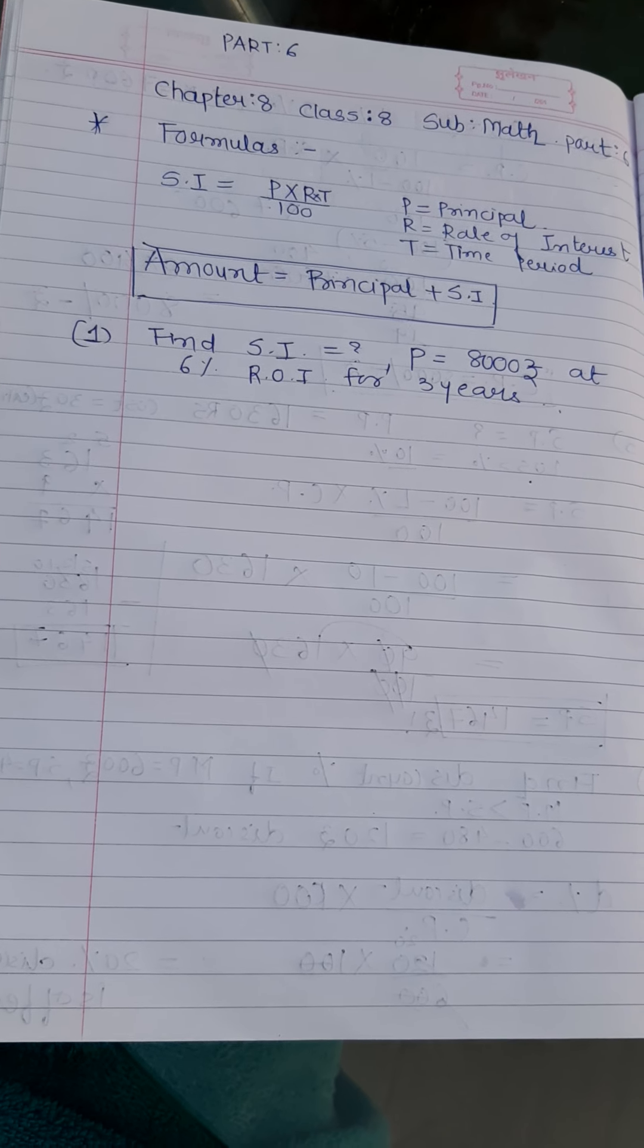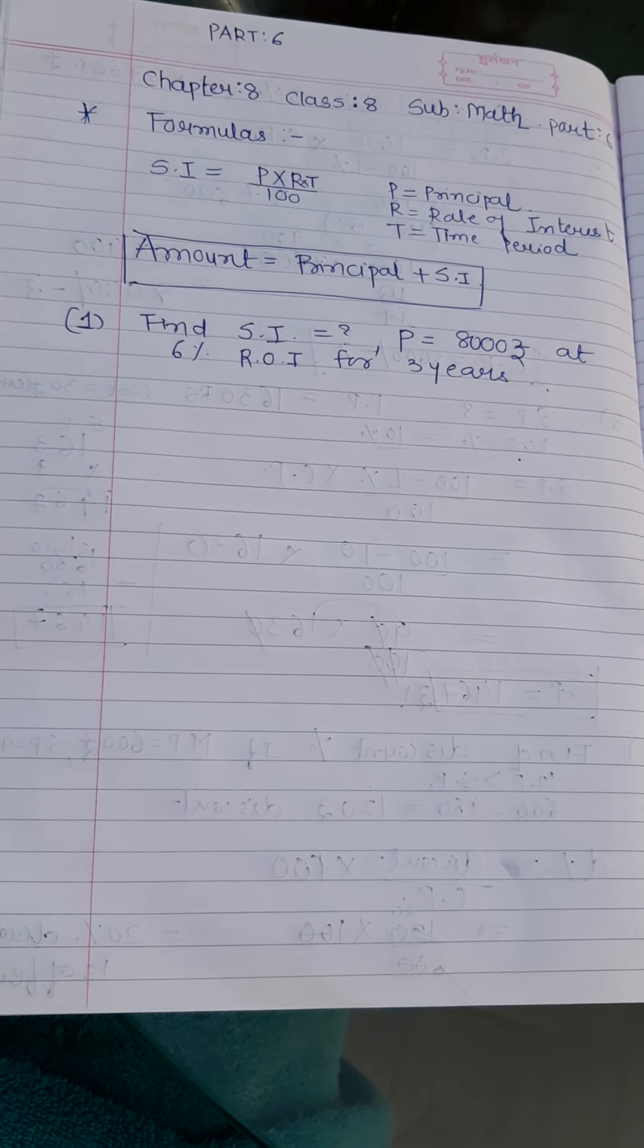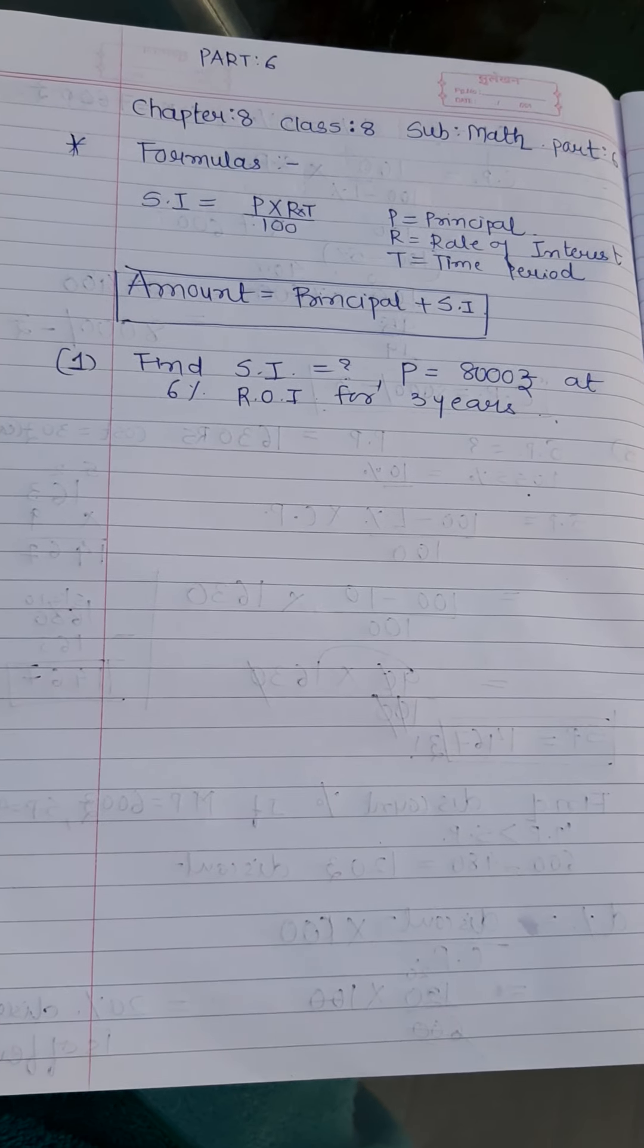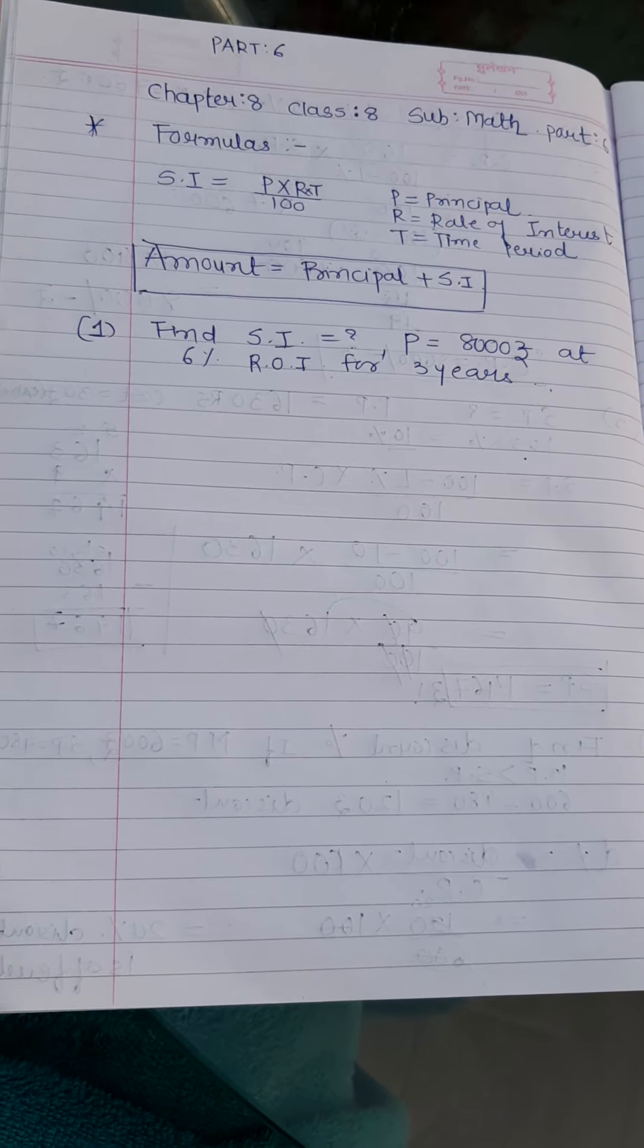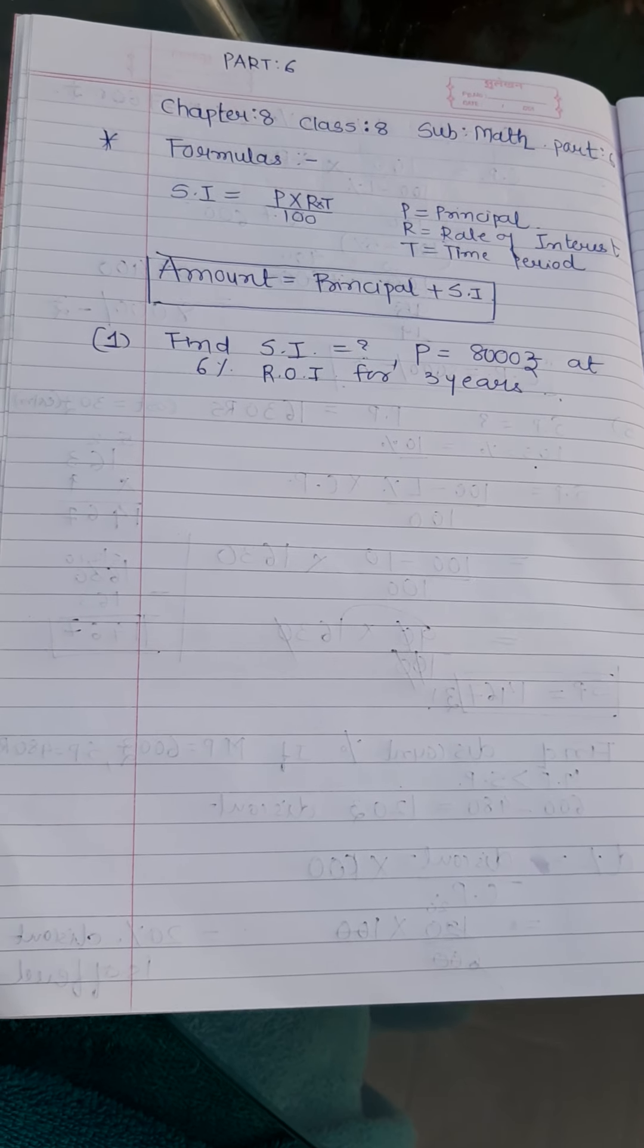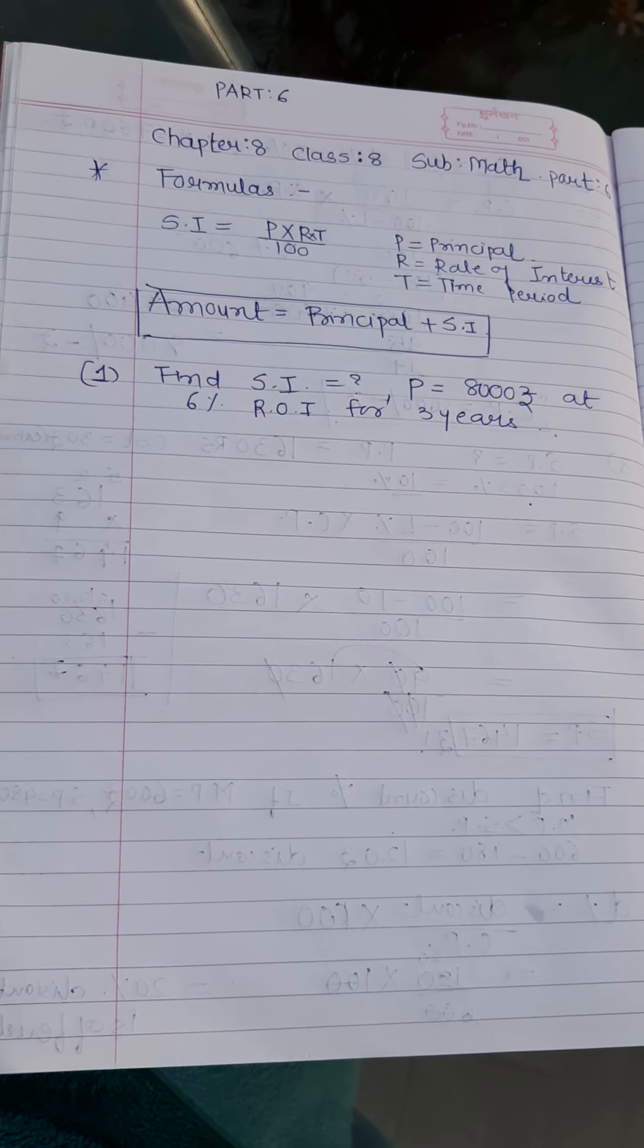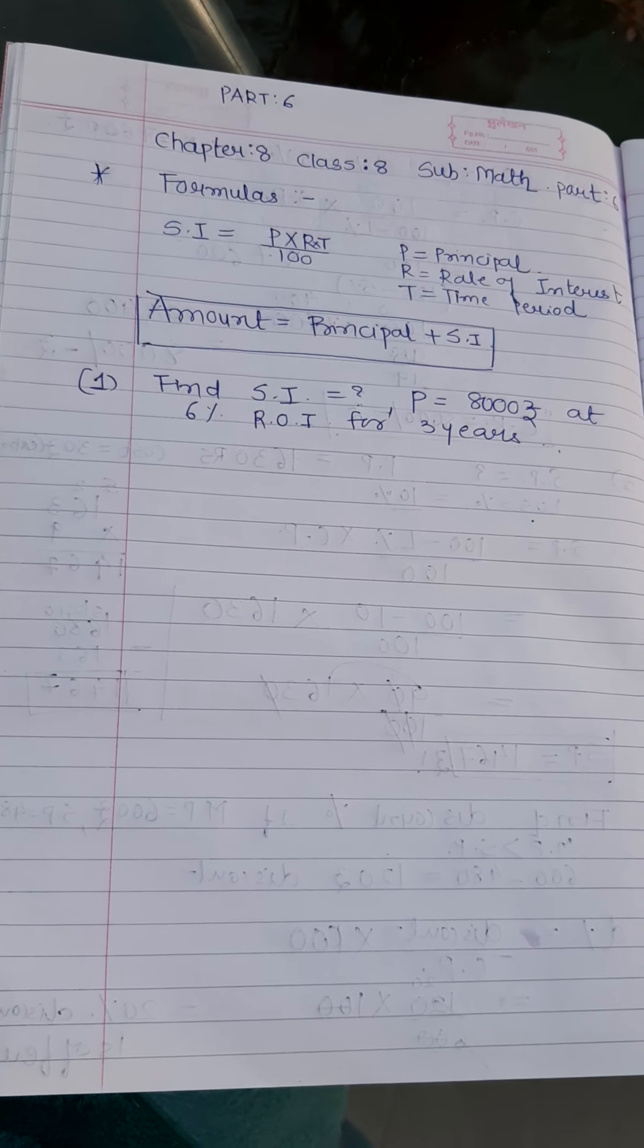Okay. So here P is principal that is the original amount that you deposit in the bank. R is rate of interest. At what rate of interest the bank is giving you interest? And T is the time period. That for how many years you want to keep that money for the simple interest.